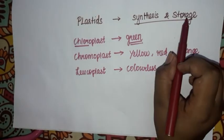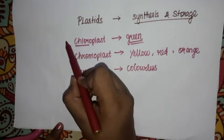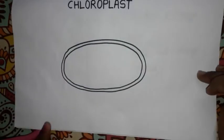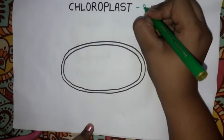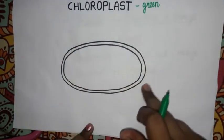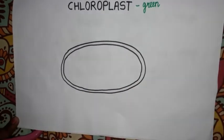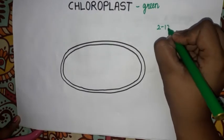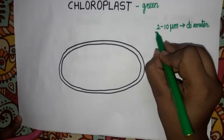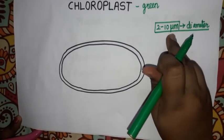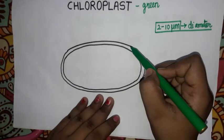So plastids have the functions of synthesis and storage, and there are three types of plastids. Now let's look at the full detailed structure of chloroplasts. The chloroplast has a double membrane.